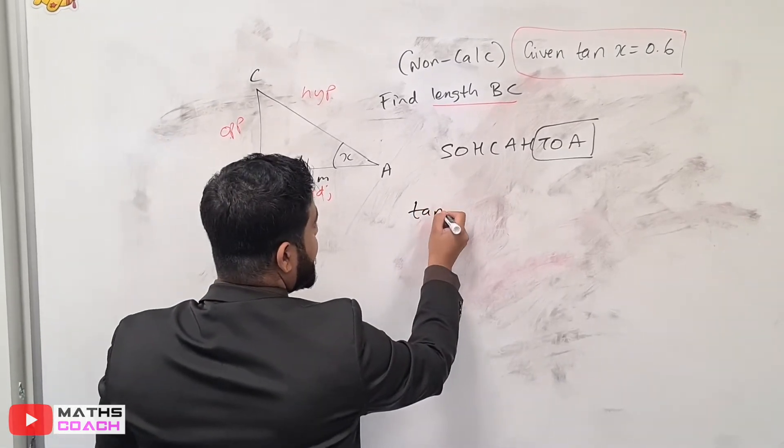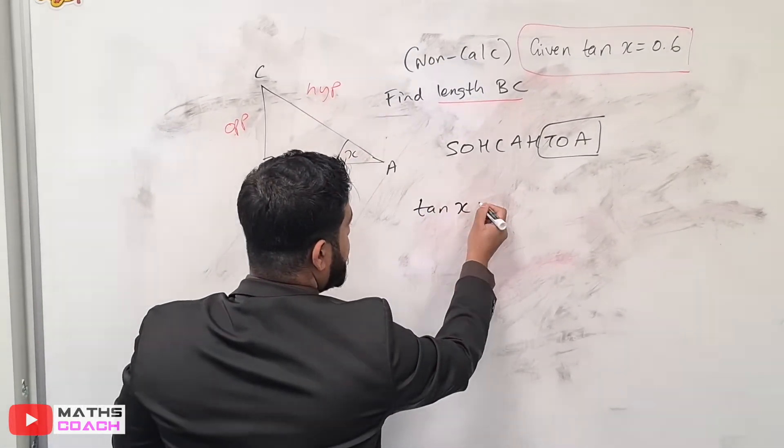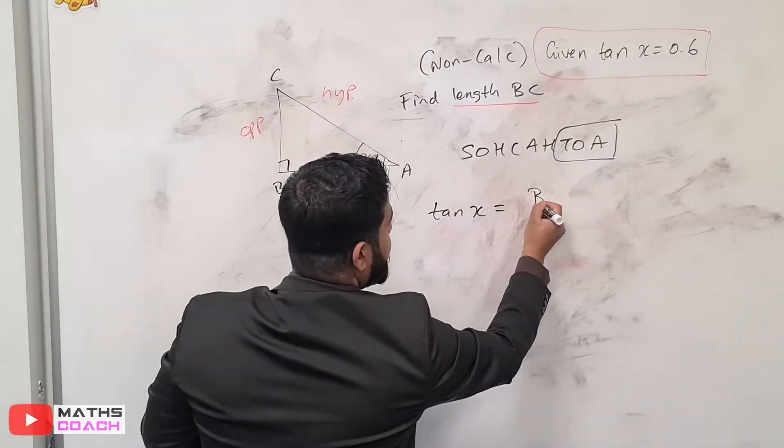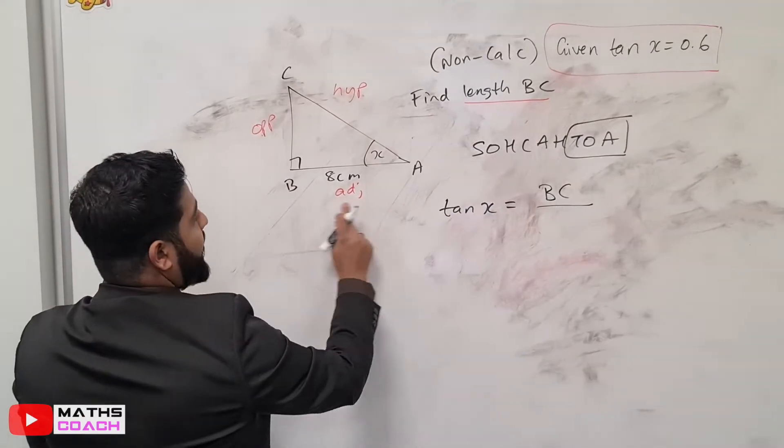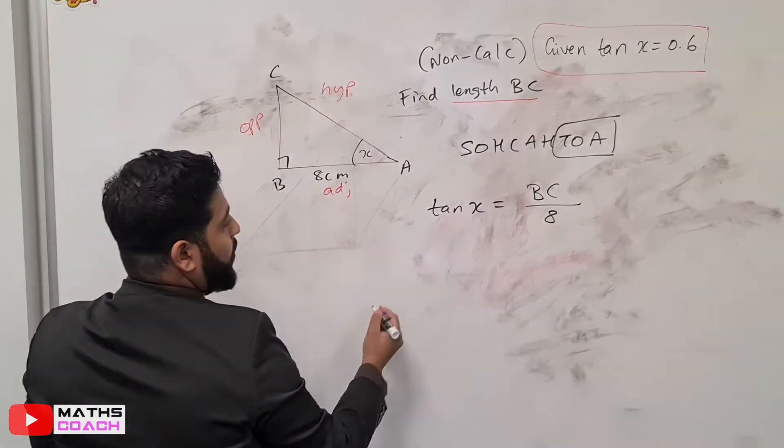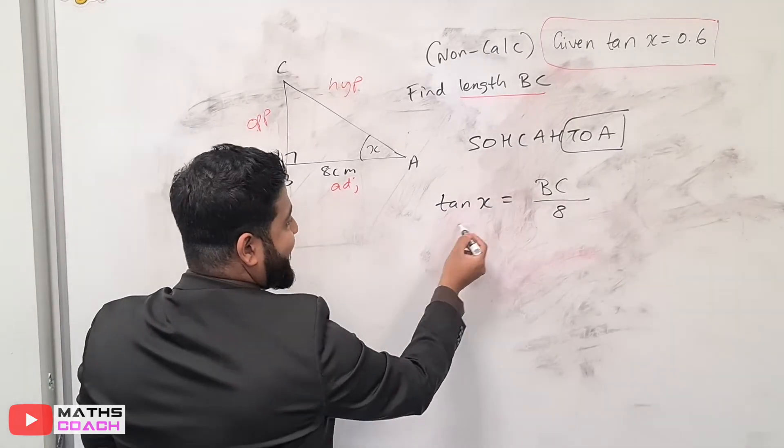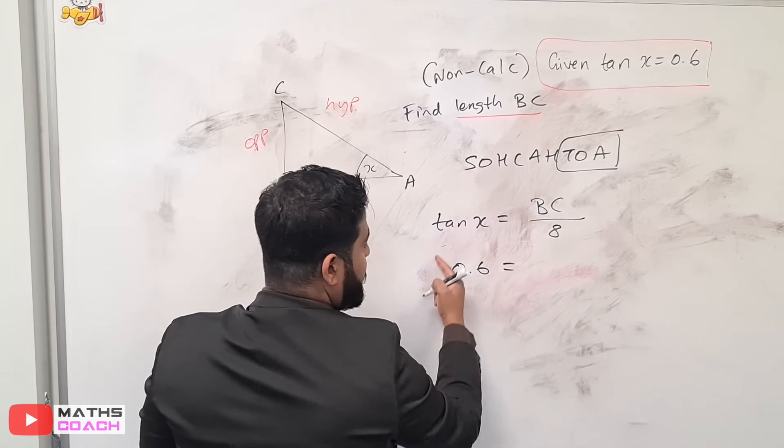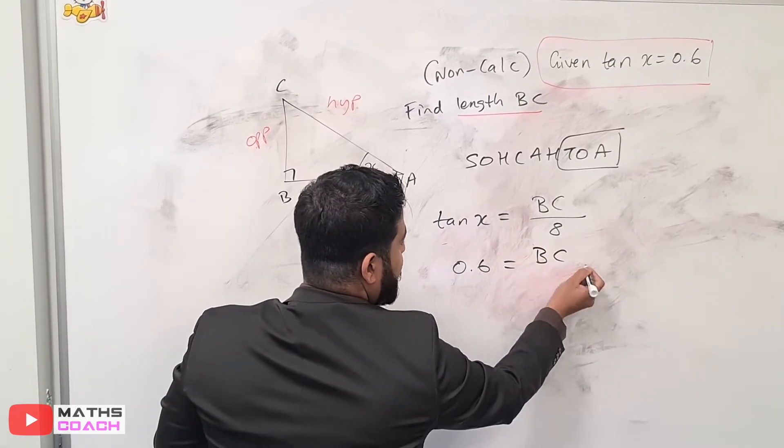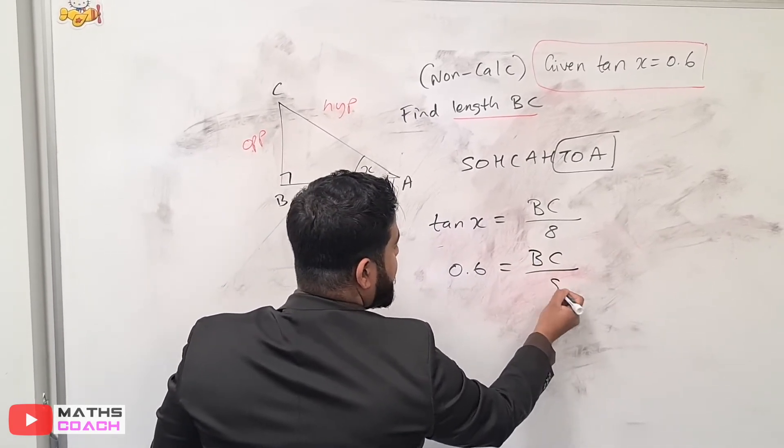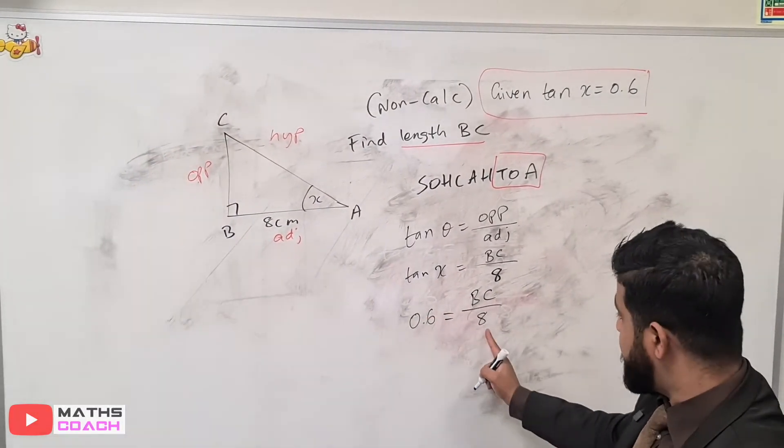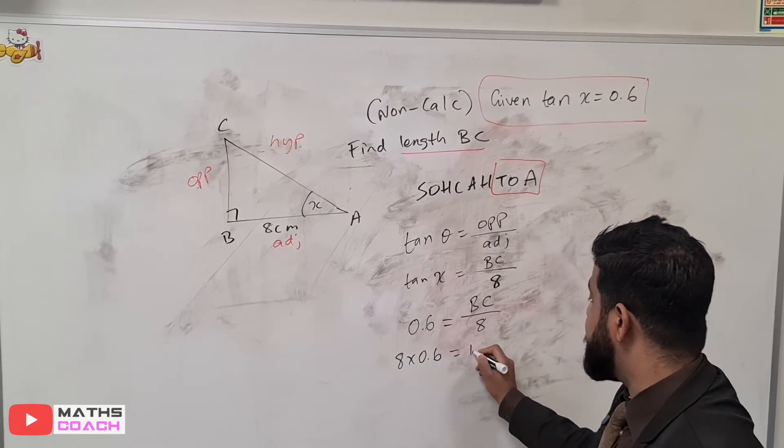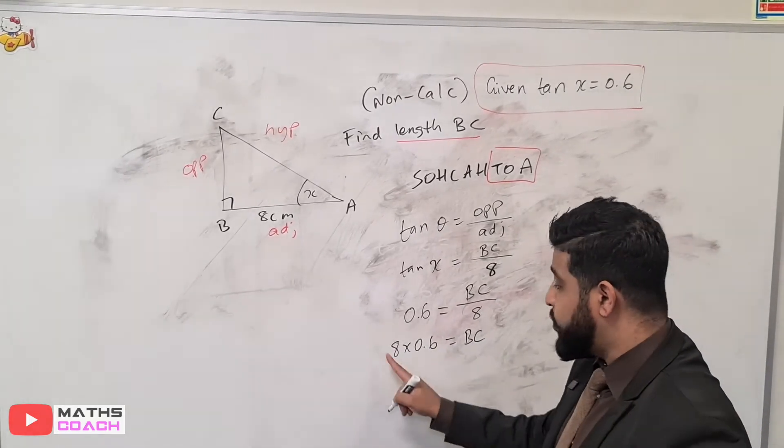Let's write this down. Tan X is our angle instead of theta. Tan X is equal to opposite, which is our BC, divided by adjacent, which is 8. We were told earlier that tan X is equal to 0.6. So if we replace the whole thing with 0.6, we have 0.6 is equal to BC over 8. If we rearrange this, the 8 will come over here and multiply. So 8 times 0.6 is equal to BC.